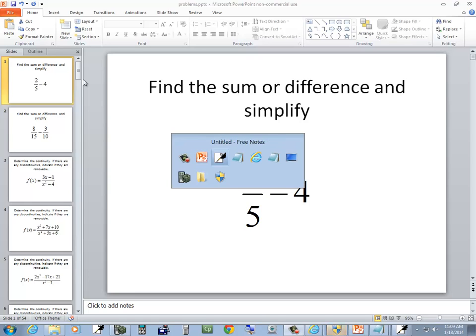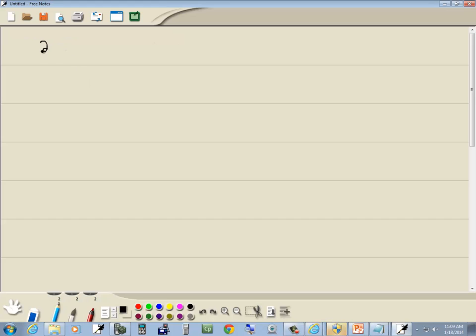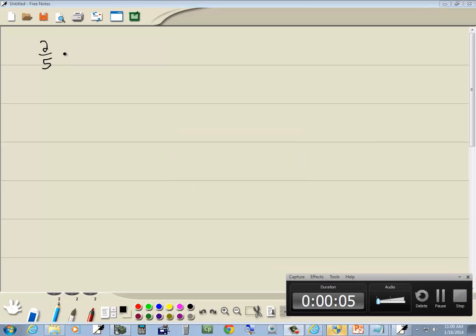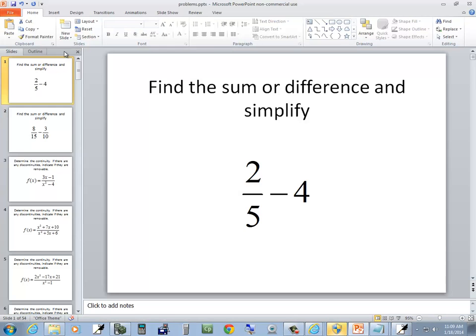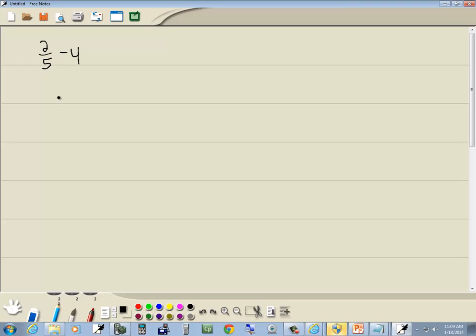Let's take a look at this problem. We've got 2/5 minus 4. First thing I notice is we're subtracting fractions, but both of them are not fractions. So I'm going to rewrite the 4 as 4 over 1.